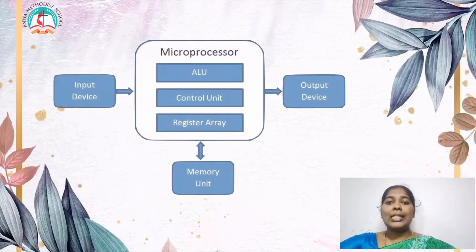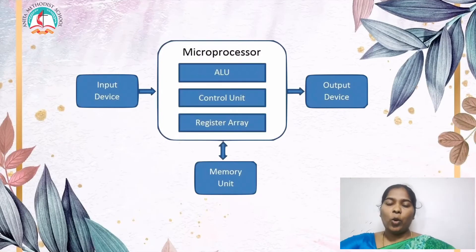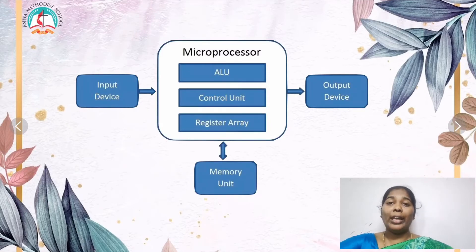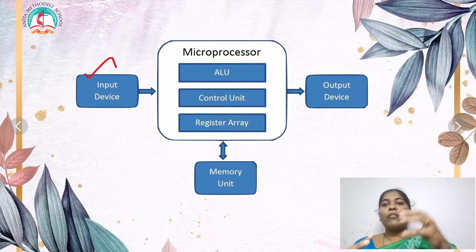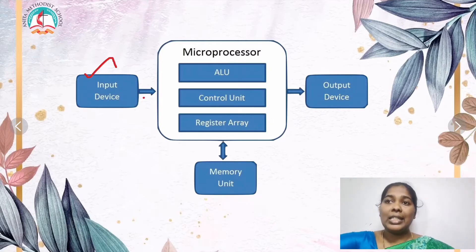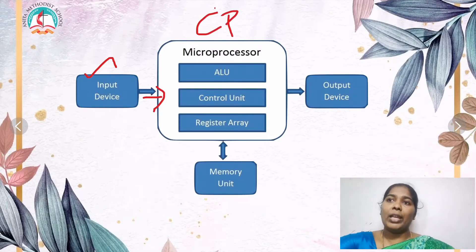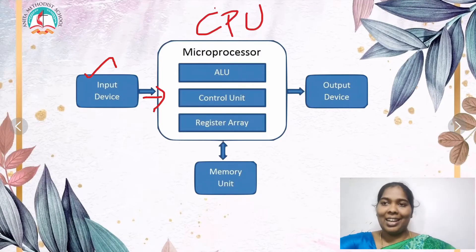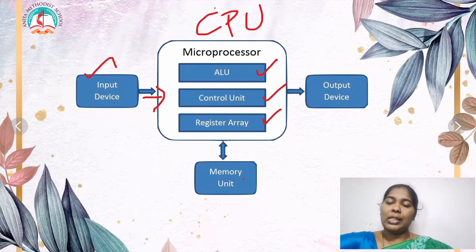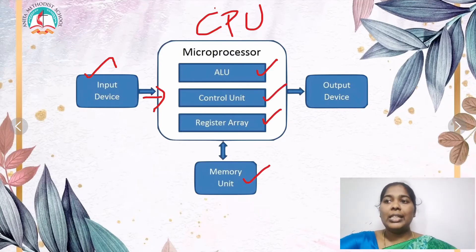This is the basic block diagram of the microprocessor. We will see how the microprocessor works. Input devices help the user to feed data to the computer. The CPU is realized by the microprocessor. Under the microprocessor we have ALU, control unit, register array, and the memory unit. Once processing is complete, it produces the desired output.